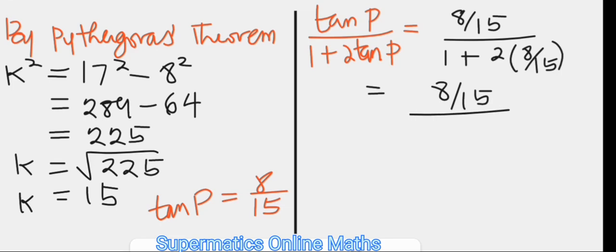That becomes 8 over 15 over 1 plus 16 over 15. So we get them separated into the numerator 8 over 15, divided by the denominator which is 1 plus 16 over 15.